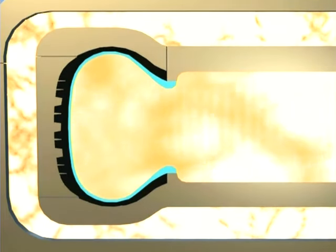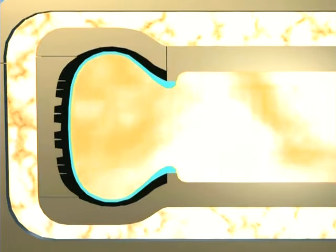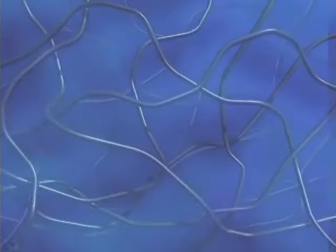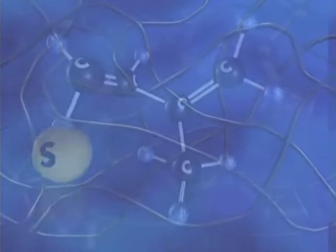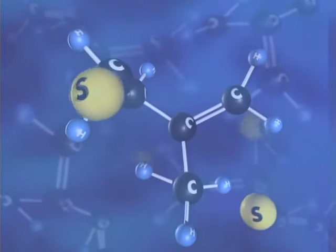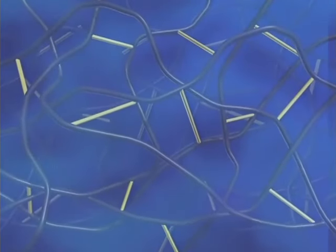This curing, or vulcanization, chemically bonds the rubber compounds to the steel and fabric cord reinforcement components. During this chemical reaction, the tire goes from a plastic to an elastic state.